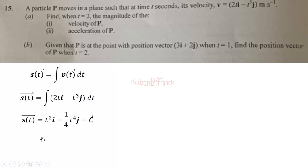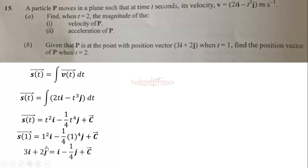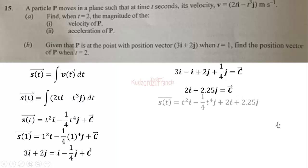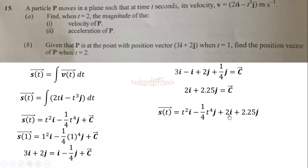We plug in t equals 1 to get the displacement at t equals 1: that is 1 squared i minus one-quarter times 1 to the fourth j, plus the constant of integration C. We are told the position vector at t equals 1 is 3i plus 2j. Setting these equal and solving for C by subtracting corresponding components, we get C equal to 2i plus 2.25j.